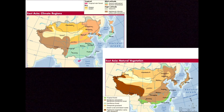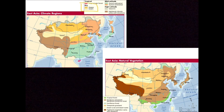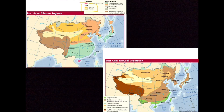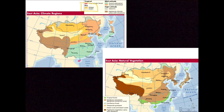Moving on to the desert and steppe type of climate, shown on the map as the dry climate. You'll mainly see this in Mongolia and northern China. Moisture that might reach these areas is blocked by the rain shadow effect — the mountains prevent clouds and moisture from getting over the top, creating a dry desert.